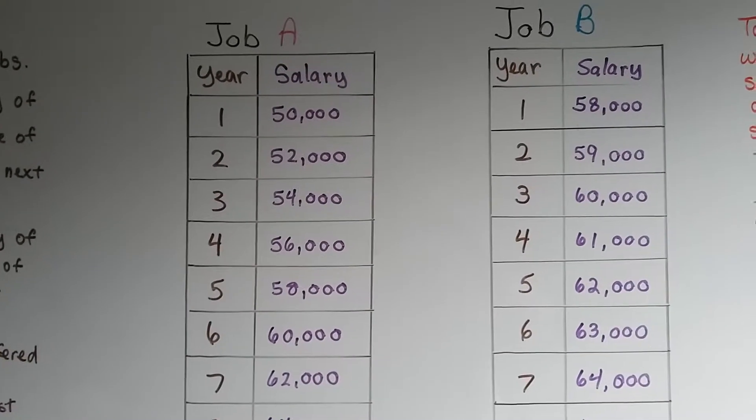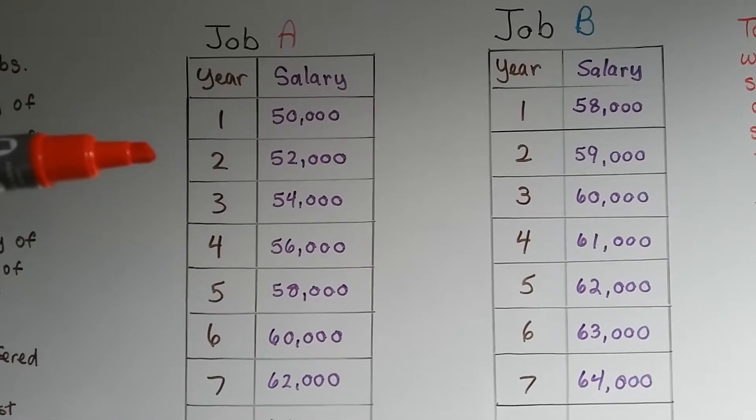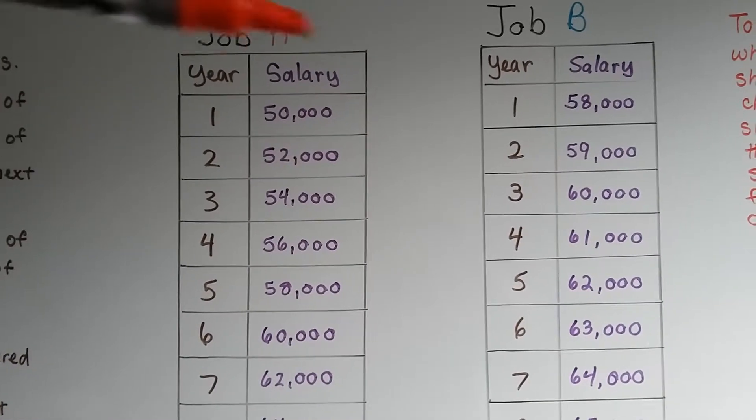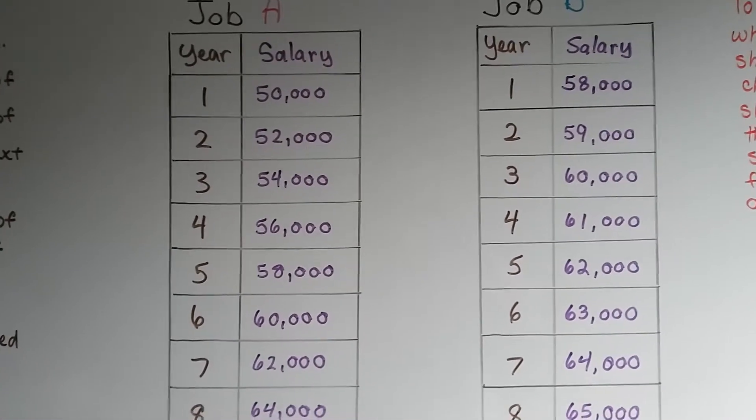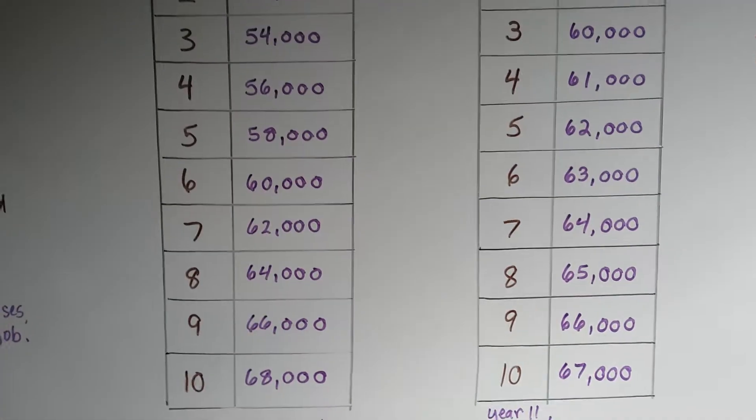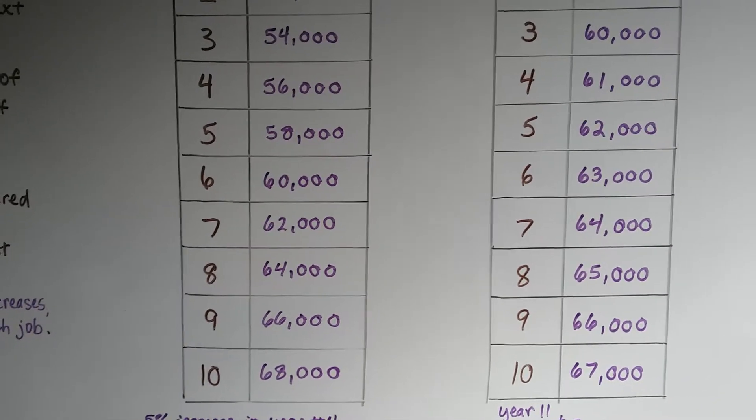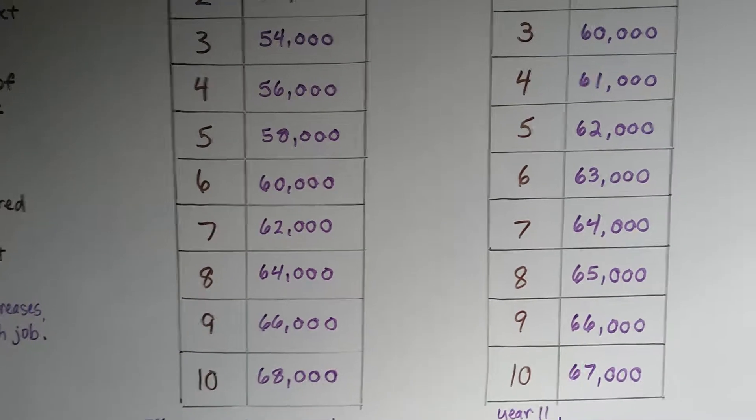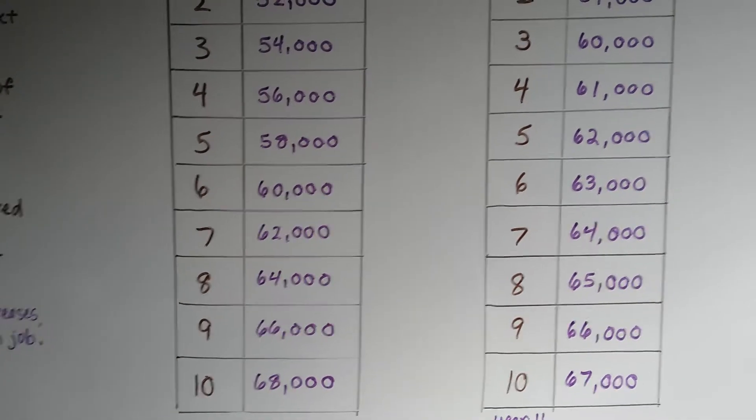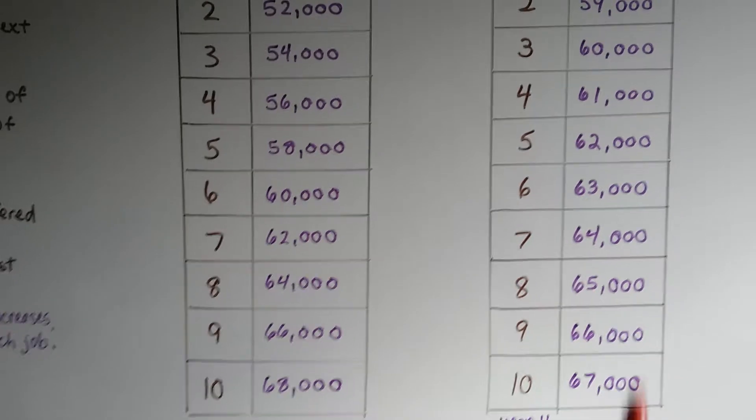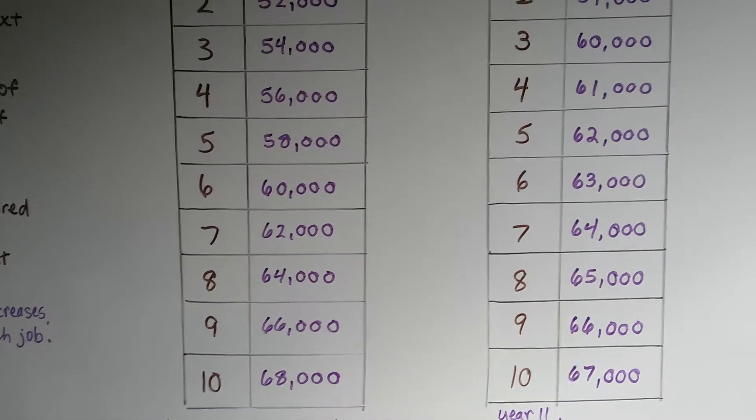On year two, she's only making $52,000 here, but she's making $59,000 at this job, isn't she? And by the time we get down to 10 years, we can see that this job is paying $68,000, where this one's only paying $67,000. So this one started higher, but now she's making more at job A.